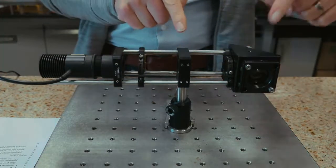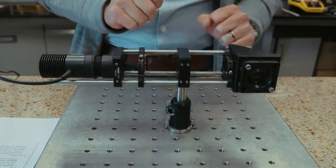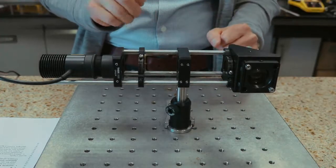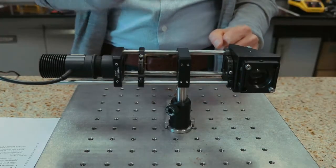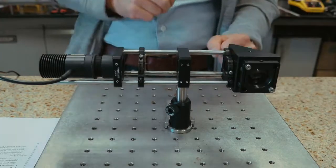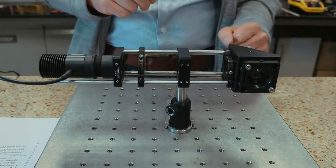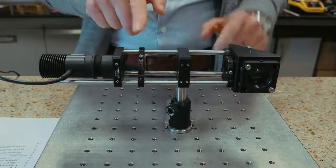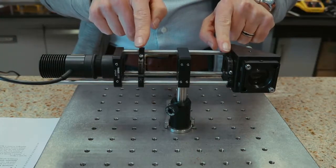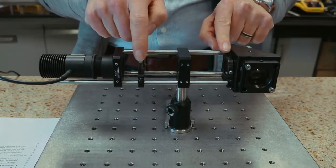Two convex lenses in a 4F configuration relay the focal plane of the aspheric lens onto the focal plane of the detection objective of the microscope, where the sample is placed. Irises at the common focal planes of the lenses act as field and aperture diaphragms.